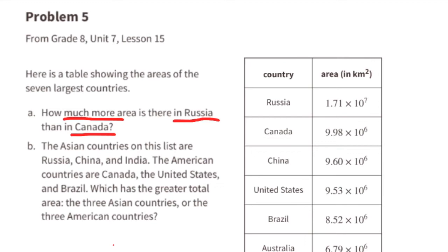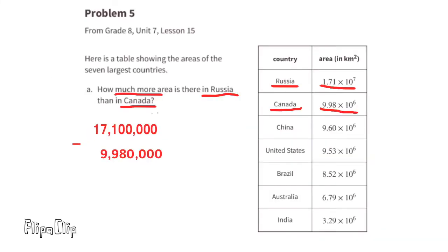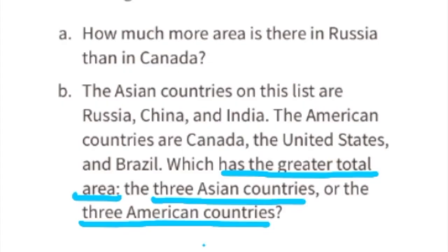Problem number five: Here is a table showing the areas of the seven largest countries. Part A: How much more area is there in Russia than in Canada? Russia's area is 1.71 × 10⁷ km², and Canada's area is 9.98 × 10⁶ km², which is 17,100,000 and 9,980,000 km² respectively. The difference is 7,120,000 km², written as 7.12 × 10⁶.